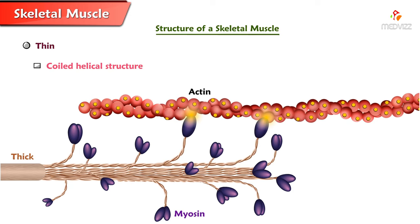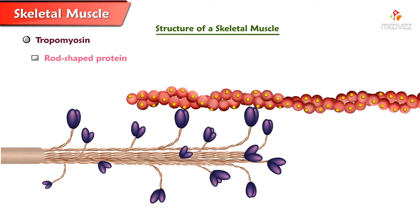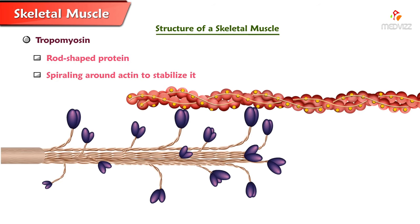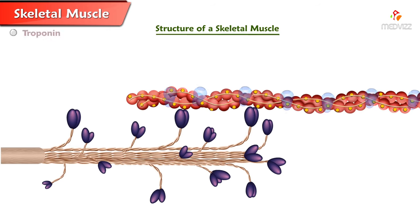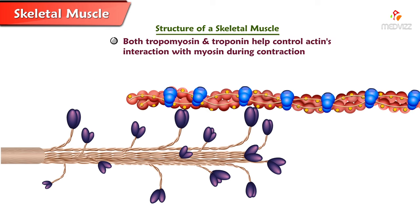Thin filaments are coiled, helical structures that resemble twisted strands of pearls. Tropomyosin is the rod-shaped protein spiraling around the backbone of actin to stabilize it. Troponin is a complex of polypeptides: one binds to actin, one that binds to tropomyosin, and one that binds to calcium ions. Both tropomyosin and troponin help control actin's interaction with myosin during contraction.